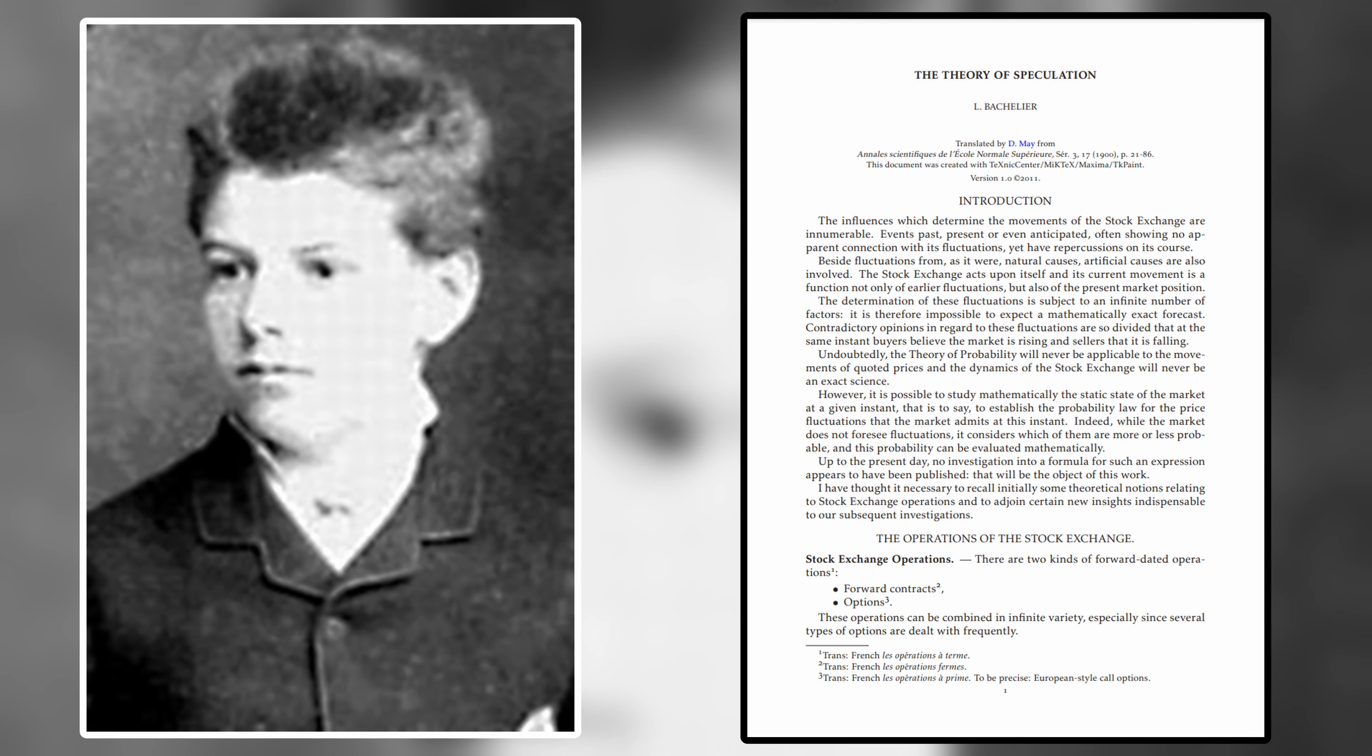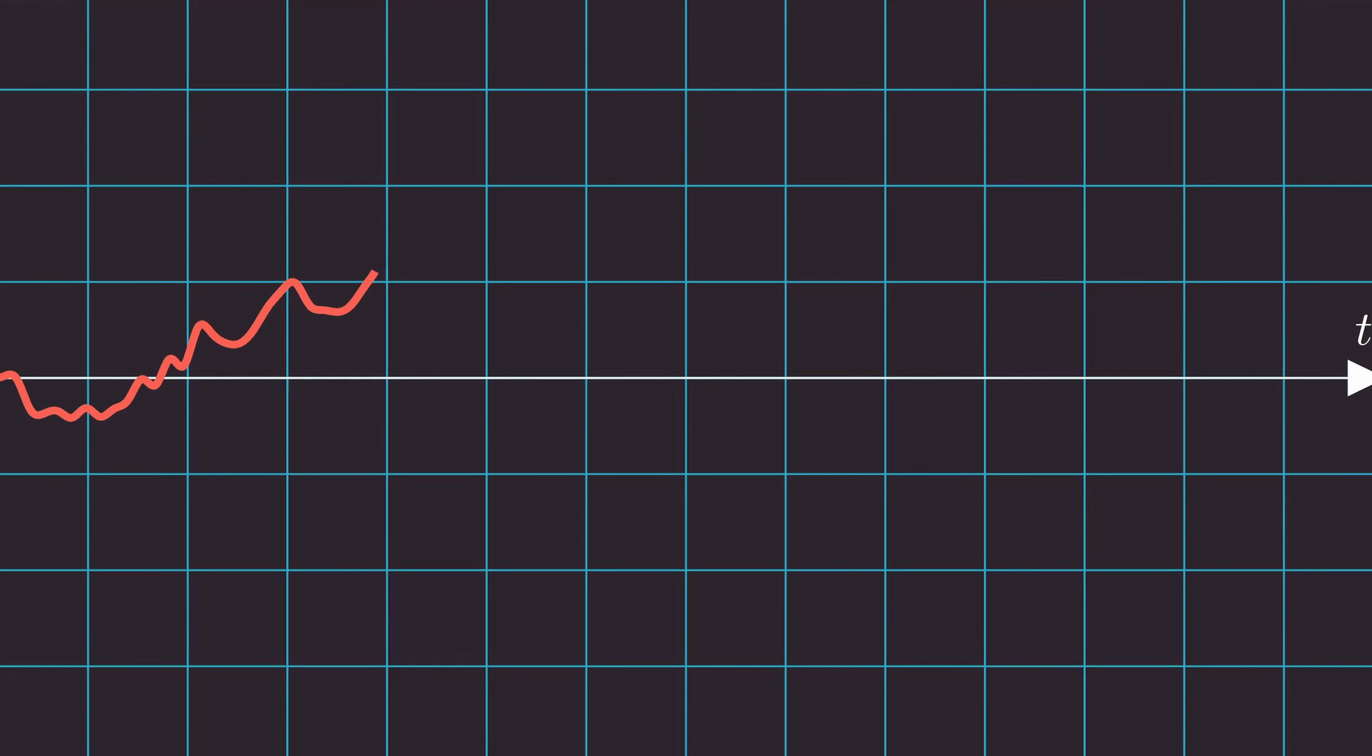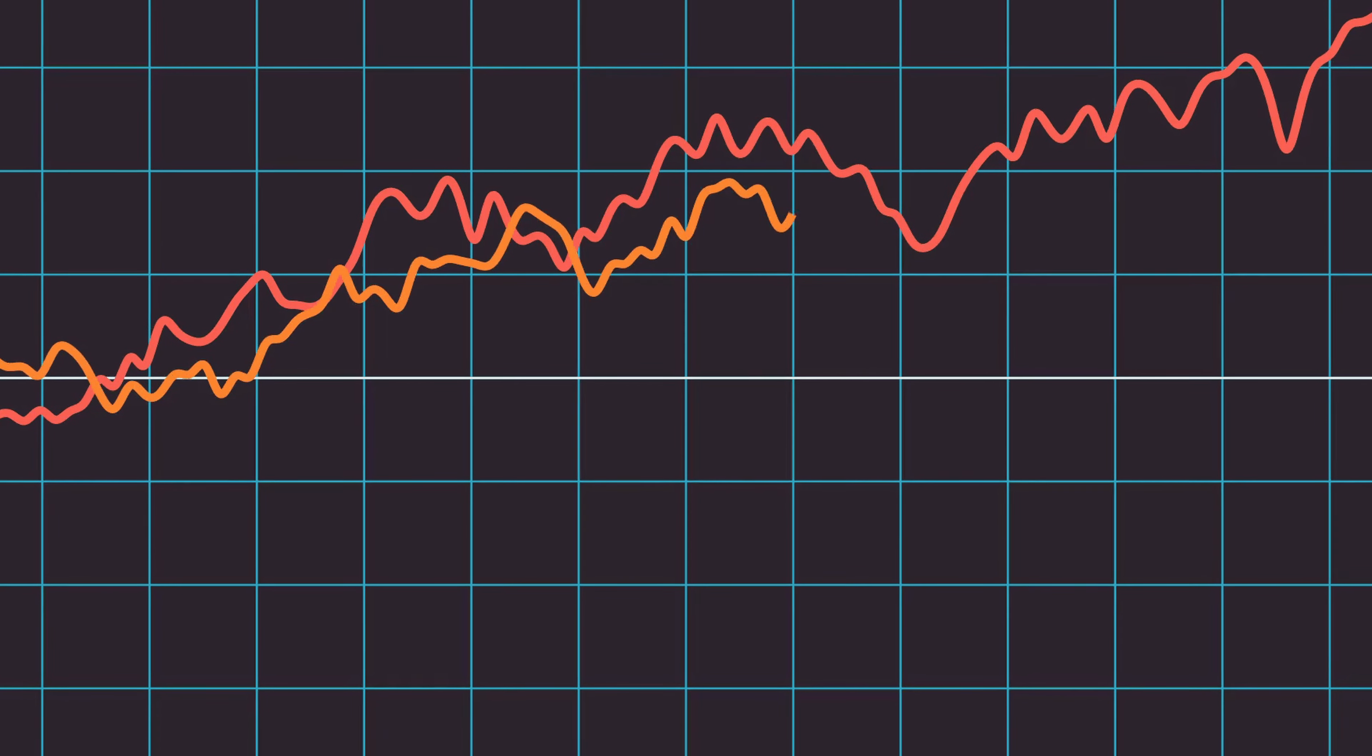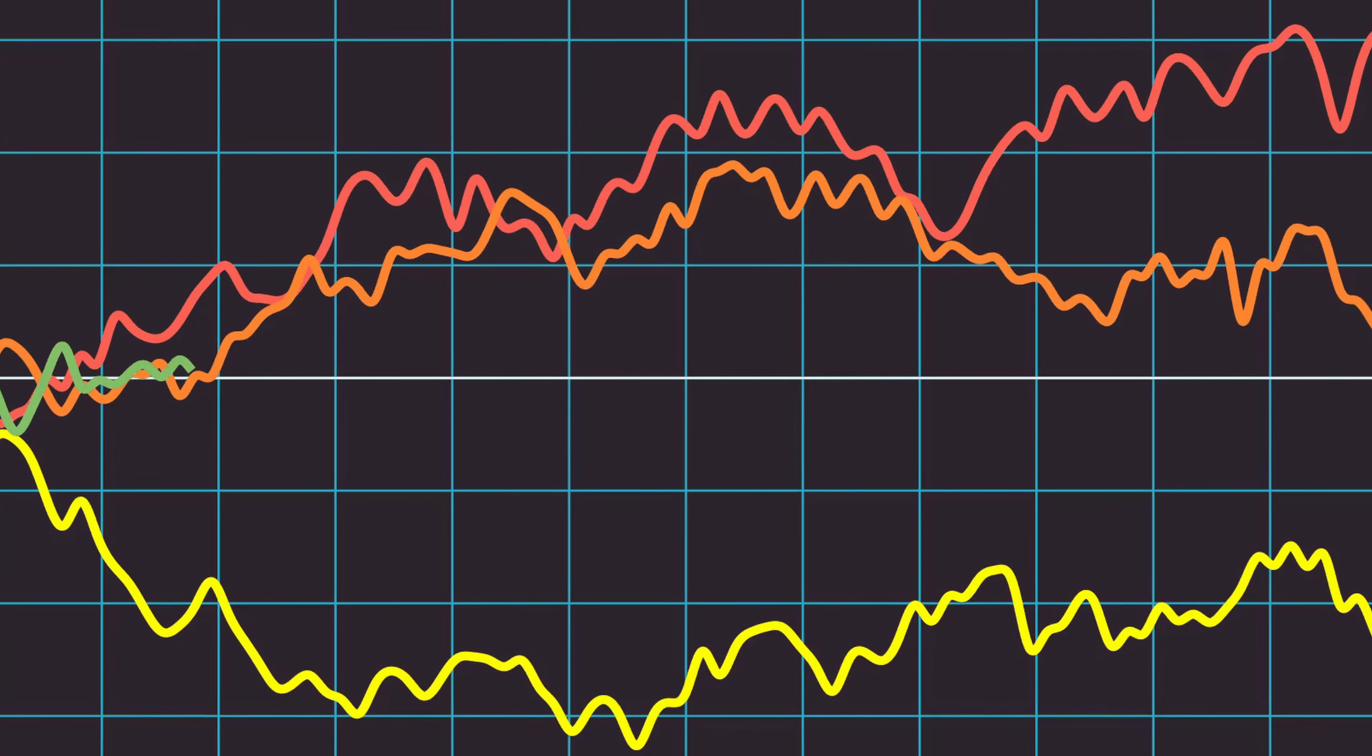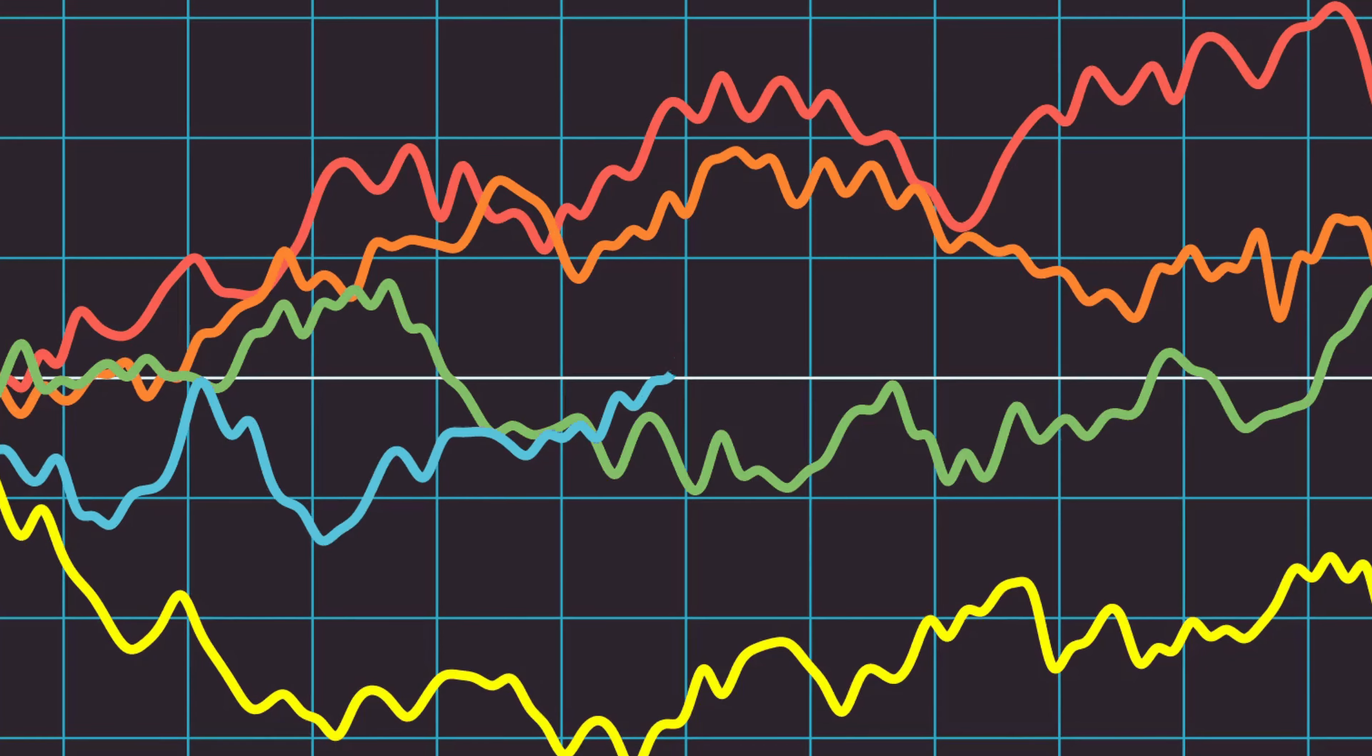Nearly eighty years later, at the turn of the twentieth century, French doctoral student Louis Bachelier published his doctoral thesis entitled The Theory of Speculation. Although this thesis had primarily a huge mathematical impact on the study of finance, it was a revolutionary paper because it was the first mathematical model of Brownian motion, showing how it is a stochastic process, meaning randomly determined.